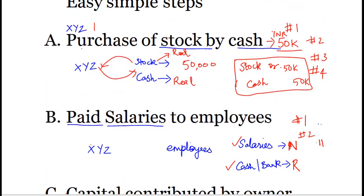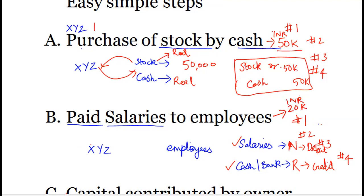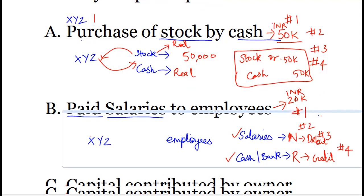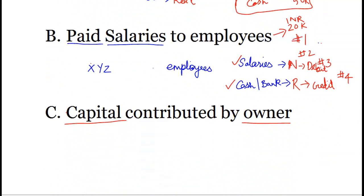Now step three: applying the golden rule. For a nominal account, we debit all expenses and losses and credit all incomes and gains. So salary is a nominal account and it is an expense, so we debit the salary account. We are paying cash, and for a real account, credit what goes out, so we credit cash or bank. And that is how we arrive at the last step — passing the journal entry. This must be a financial transaction, so let us say 20,000 rupees is being paid to employees. The journal entry is: debit salaries and credit cash or bank for 20,000.